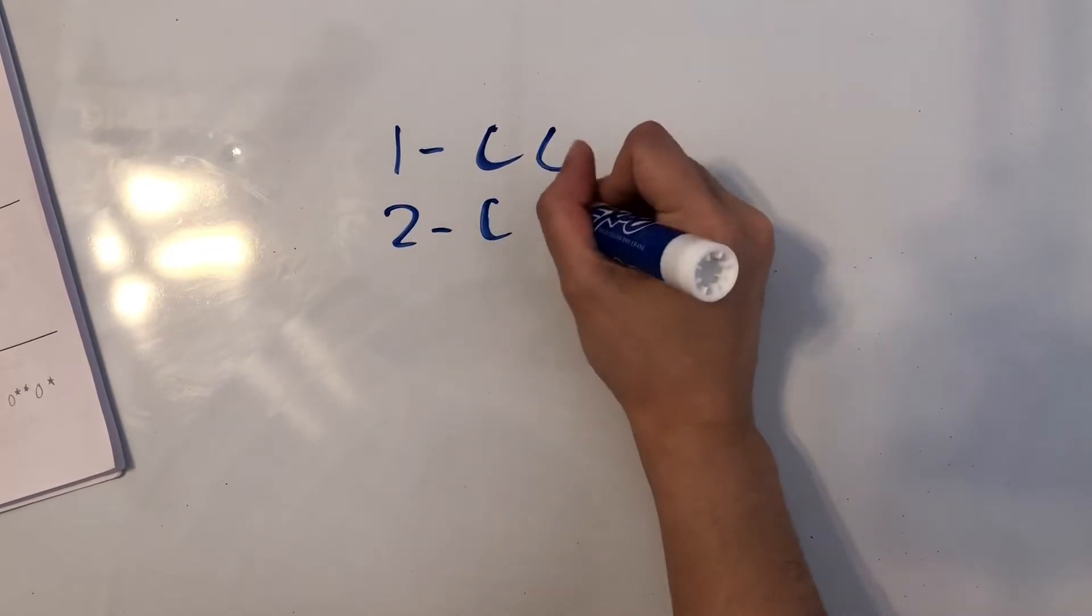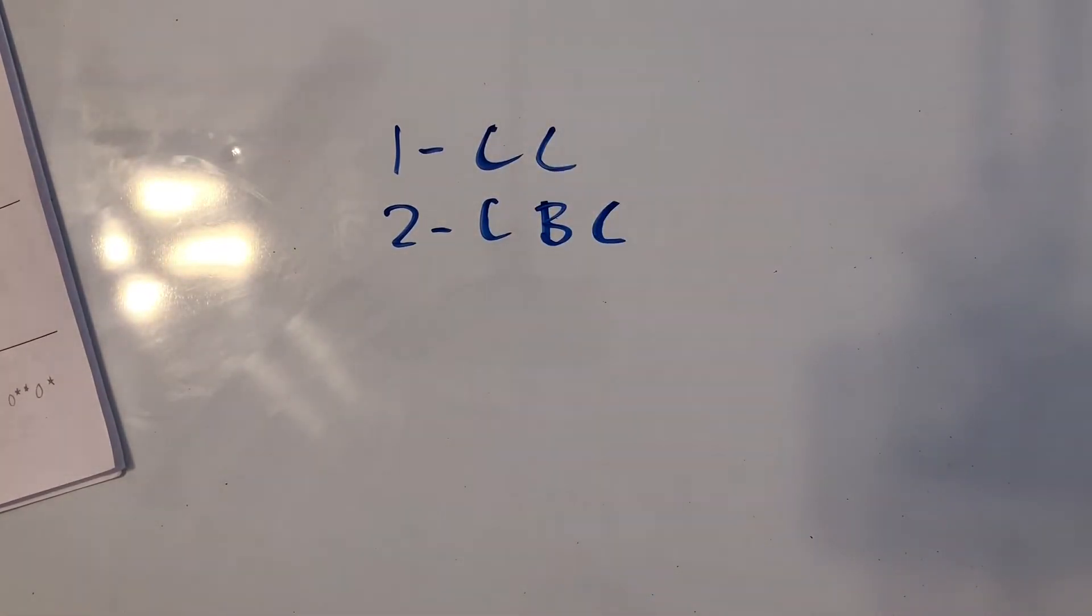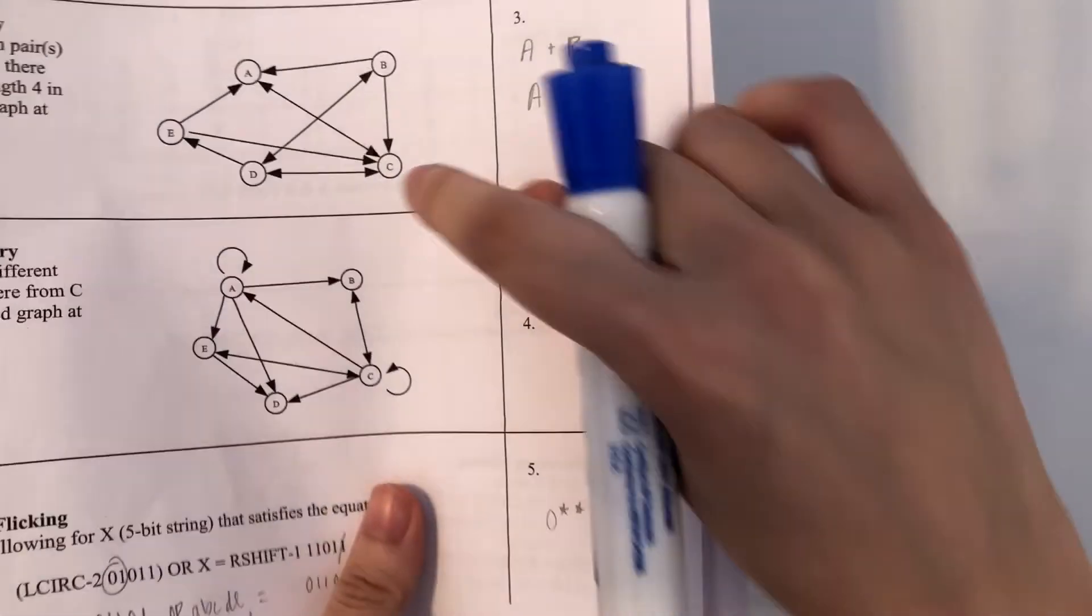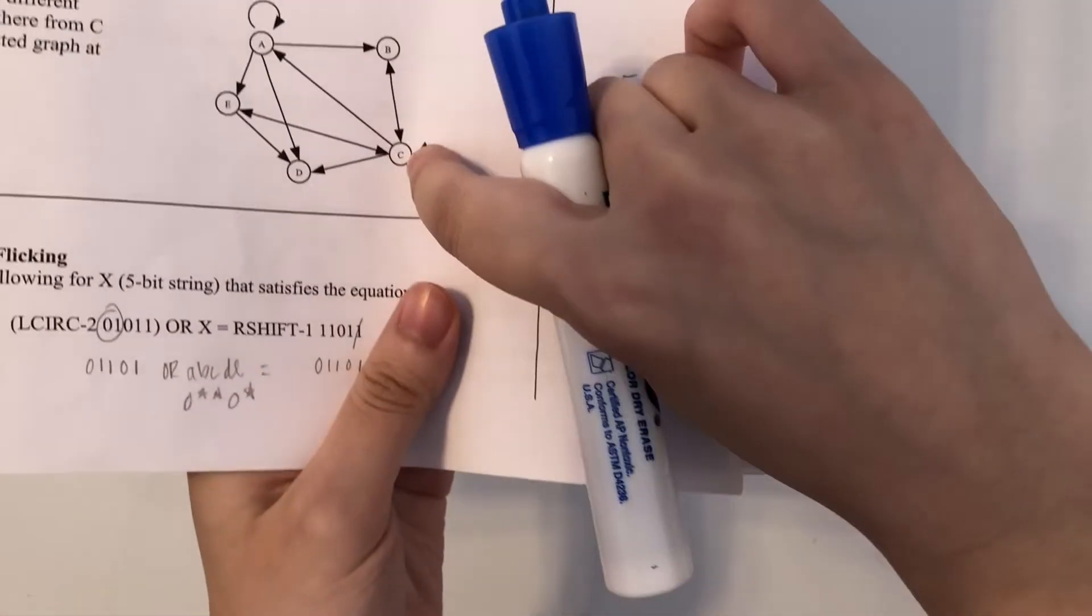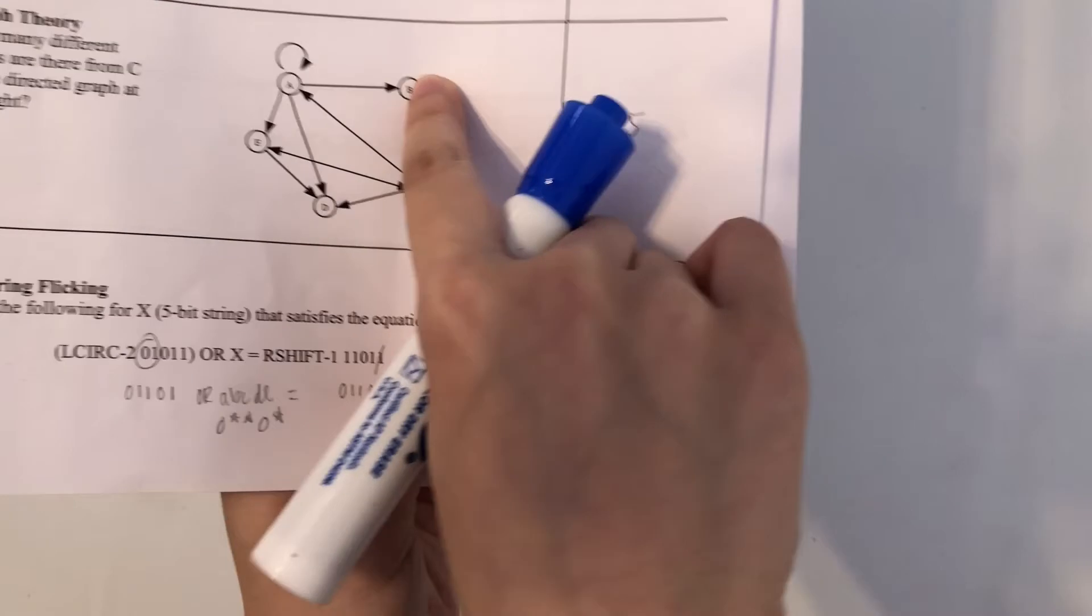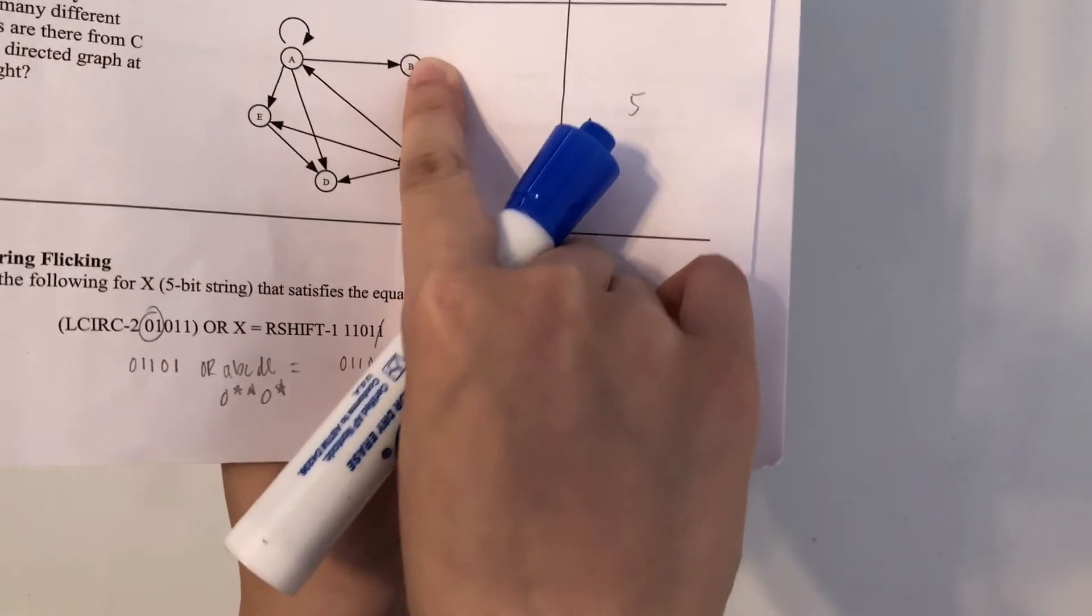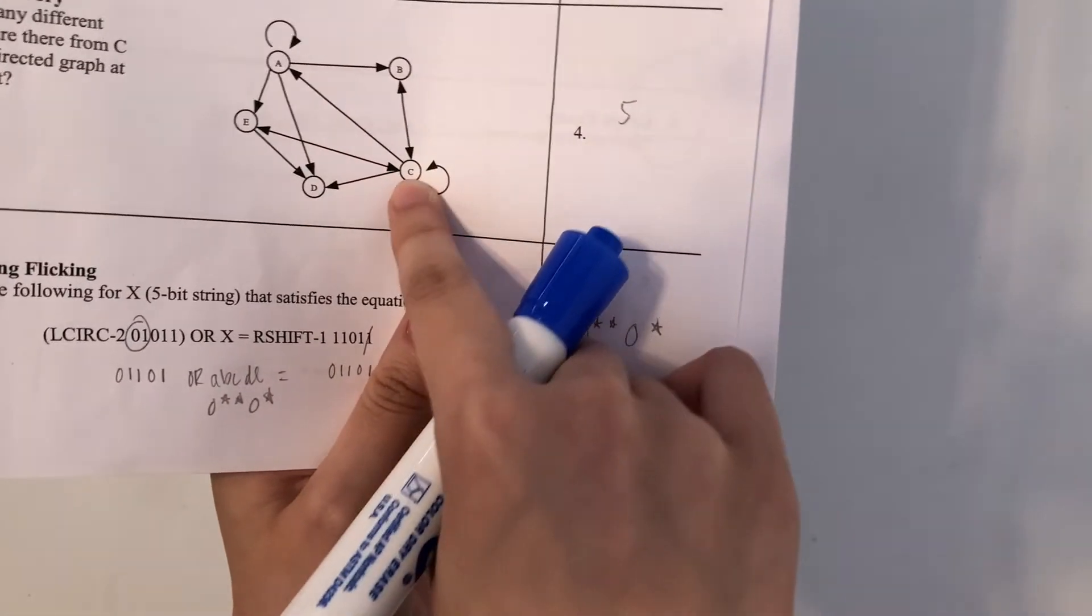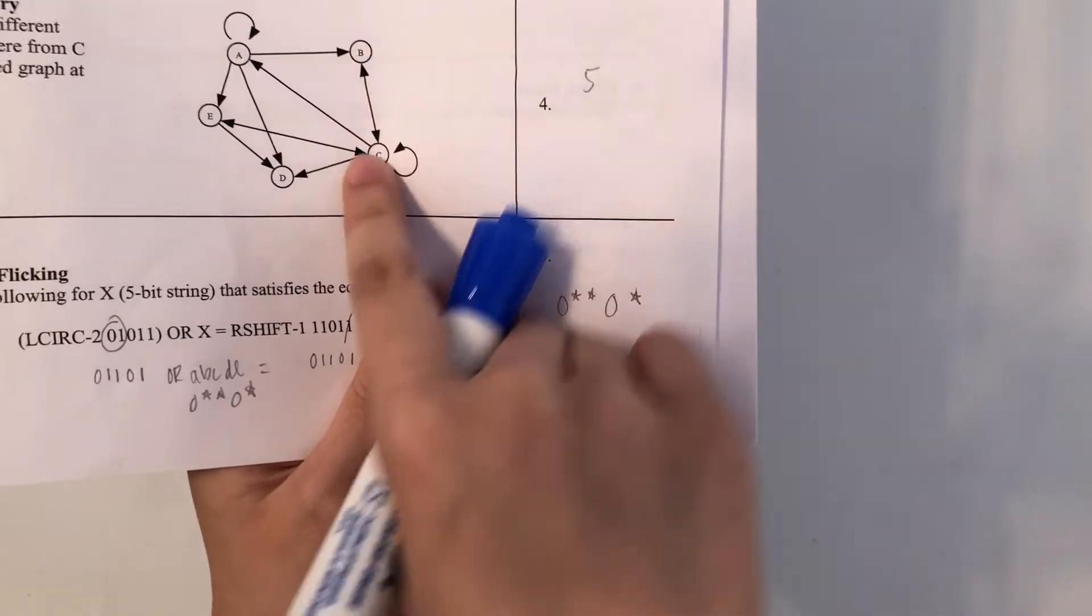So that would be our second one, C-B-C. Let's see if there are any other ones going from C to B. From C to B, it looks like we can't go anywhere else from B, so I guess that's our only path from C to B to C.